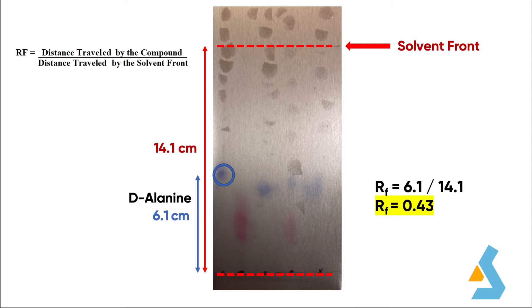If you could remember, our first sample was D-alanine. So, this first spot that we see on the very left should belong to D-alanine. When we measured this level, we found the distance traveled by D-alanine as 6.1 cm.